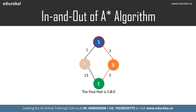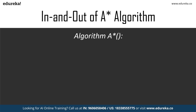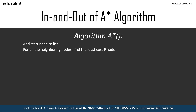With the example understood, let me explain the algorithm. You have two lists: the open list and the closed list. The open list contains the nodes we are currently visiting, and the closed list contains nodes we have not yet visited but will calculate — since A* is a complete algorithm. We add the start node to the open list. For all neighboring nodes to that start node, we find which has the least cost of F. Once done, we move the current node to the closed list.